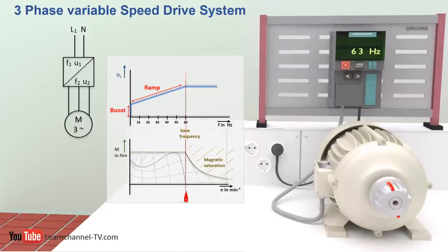The base edge frequency is achieved when the voltage supplied to the motor reaches the mains supply voltage. Raising the frequency above the edge frequency leads to magnetic saturation which cannot be compensated anymore. As a result, the torque of the motor decreases.